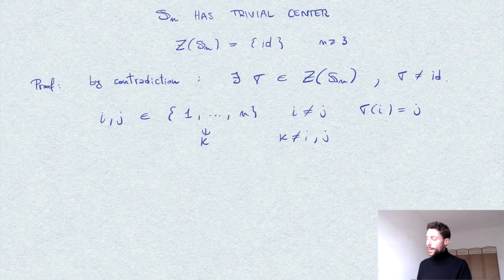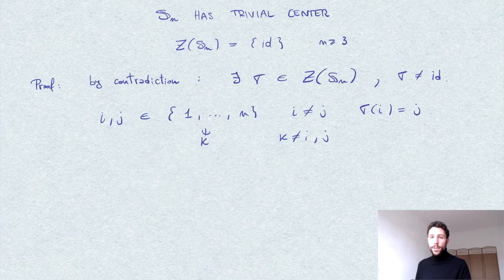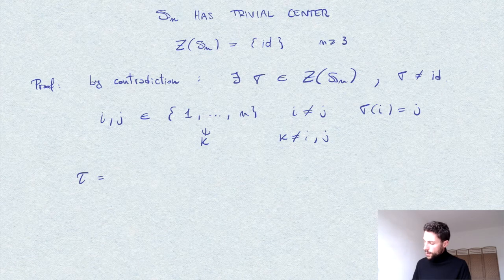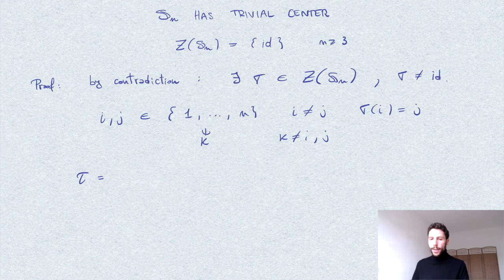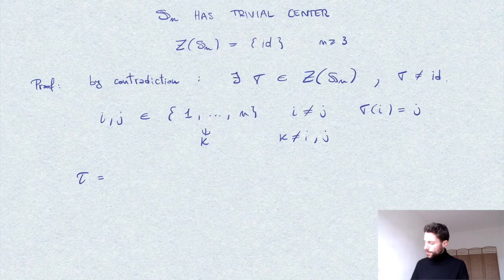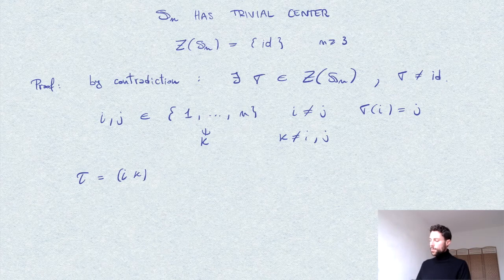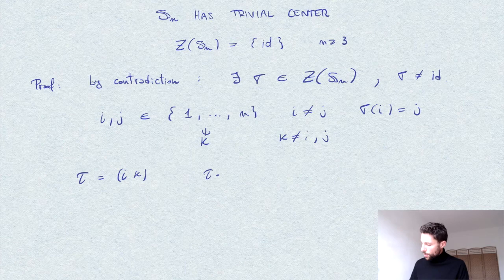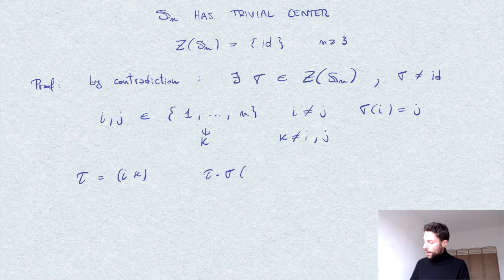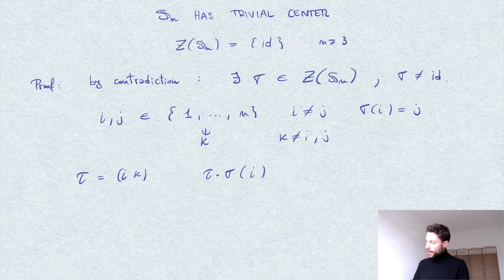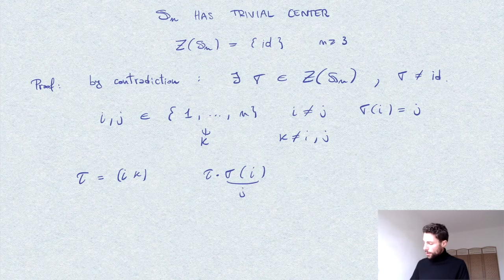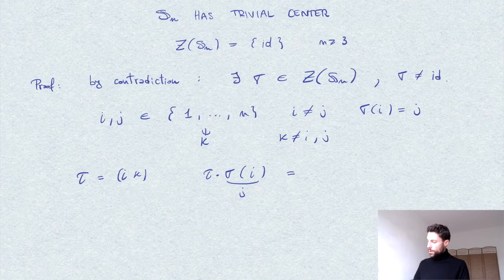Now we easily construct another element which doesn't commute with sigma. Namely, consider tau, the cycle that exchanges i and k. So tau is the transposition (i k). And let's take a look at the composition tau composed with sigma applied to the number i. So sigma of i is equal to j, and then tau of j doesn't do anything, so this is equal to j.